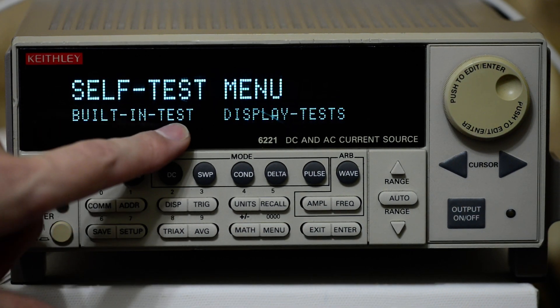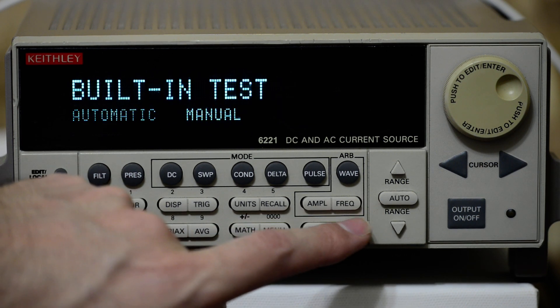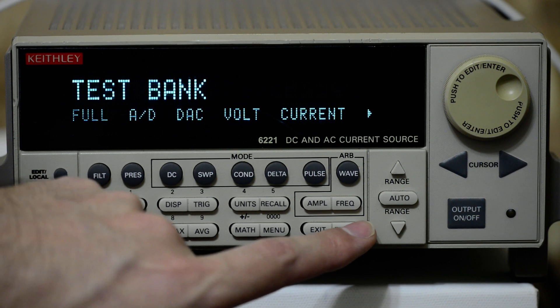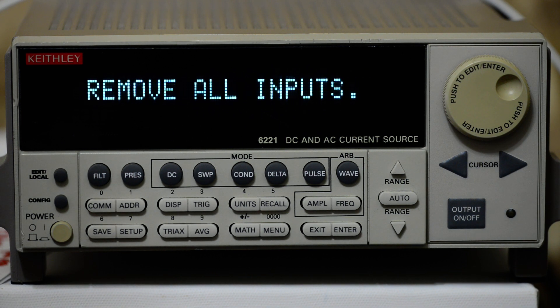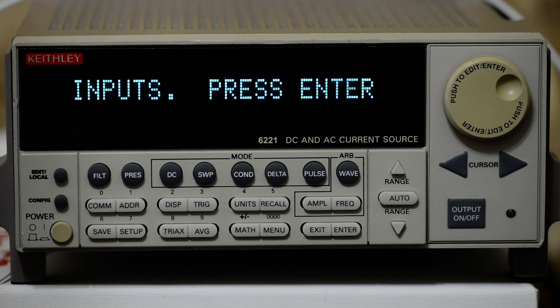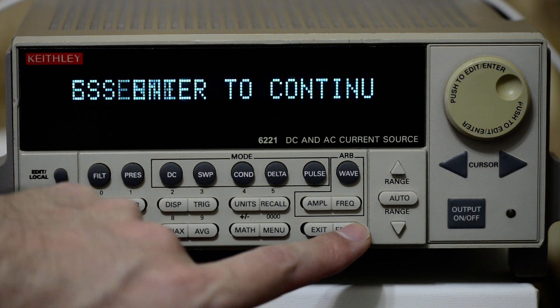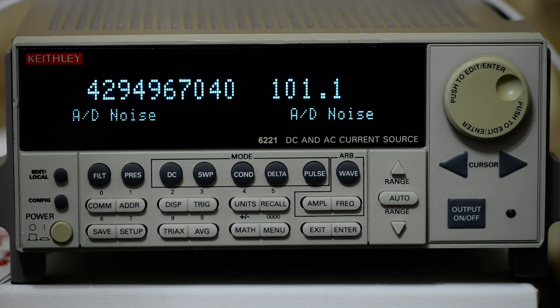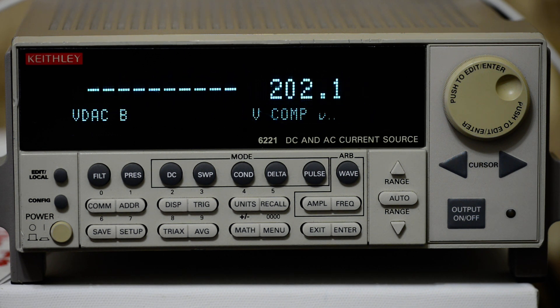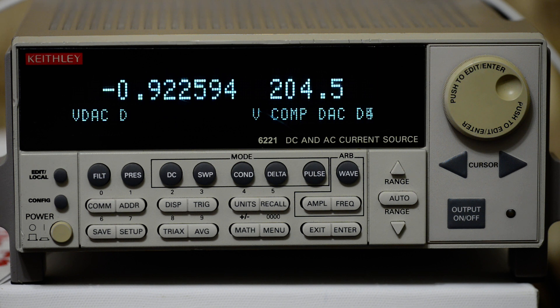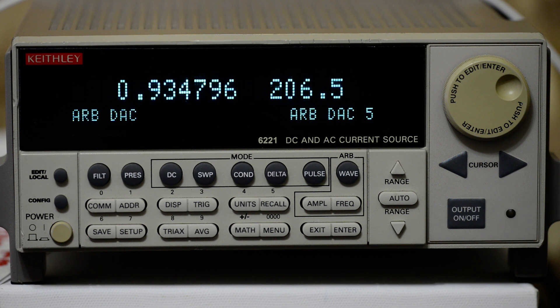So now you can see the built-in test and you can actually run the built-in test procedure. Let's see, we want to run the full test and it tells you to remove all the inputs. Press enter to continue. So let's do so. The reason why it's hidden in the secret menu is because the 6221 can provide quite high voltage, up to 100 volts and that can be dangerous. So it's protected by hiding this test mode in the secret menu.